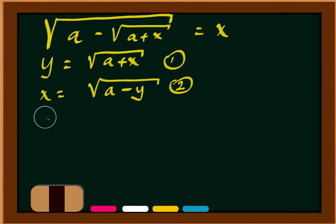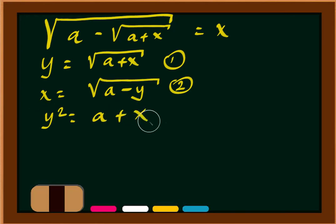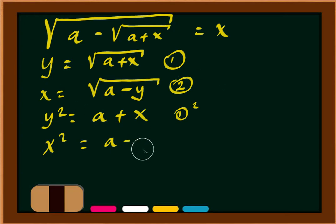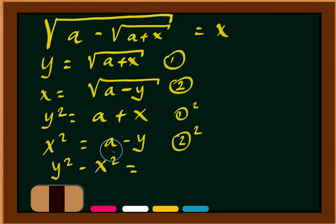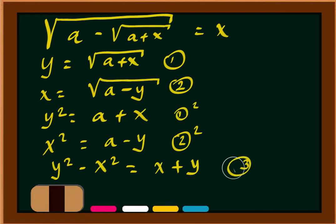Squaring the first equation gives y squared equals a plus x. Squaring the second gives x squared equals a minus y. Now let's subtract these two from each other: y squared minus x squared equals a minus a equals 0, and x minus (minus y) makes it x plus y.